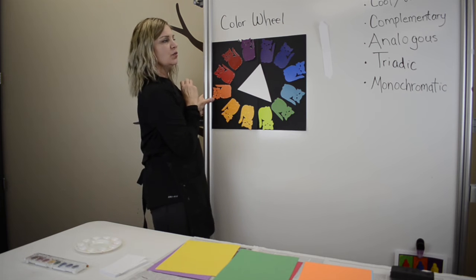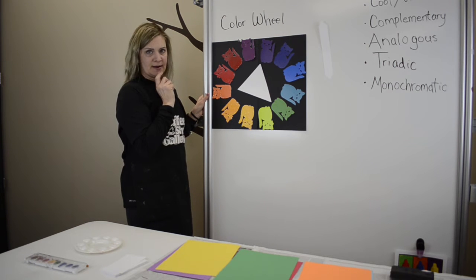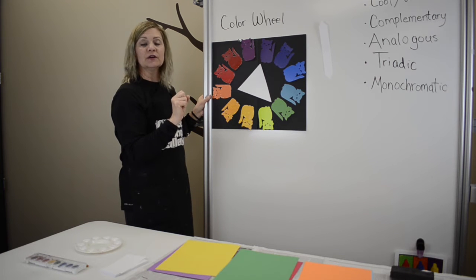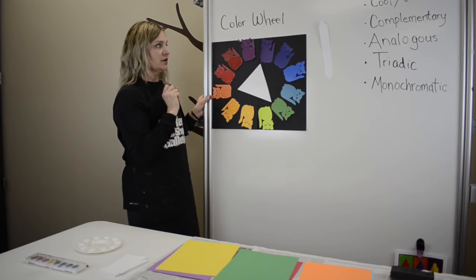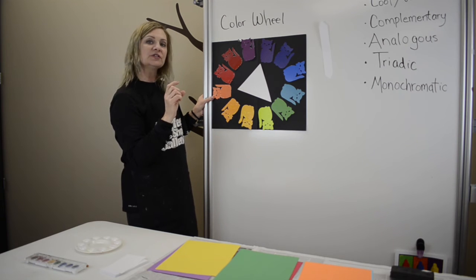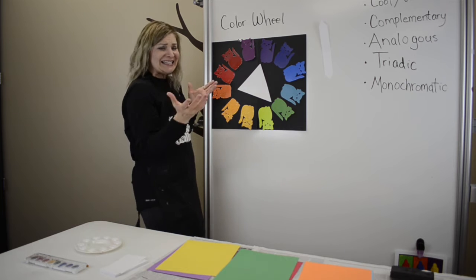We also have monochromatic. Mono means one, chromatic is color. You're using one color. We're going to work with that one at another time, but monochromatic is another type of a color scheme.